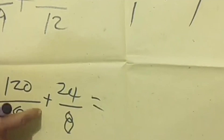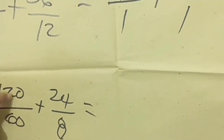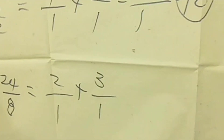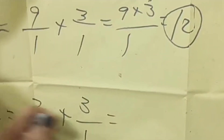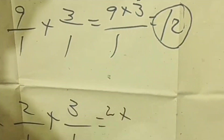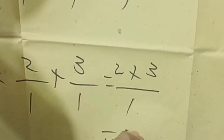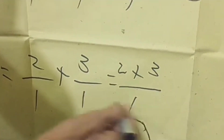Number five: 120/60 plus 24/8. For 120/60, divide by 60: 60 divided by 60 equals 1, 120 divided by 60 equals 2, giving 2/1. For 24/8, divide by 8: 24 divided by 8 equals 3, 8 divided by 8 equals 1, giving 3/1. Then cross multiply: 2 times 1 equals 2, plus 1 times 3 equals 3. The denominator is 1 times 1 equals 1. Adding 2 plus 3 equals 5, divided by 1 equals 5. This is our final answer.